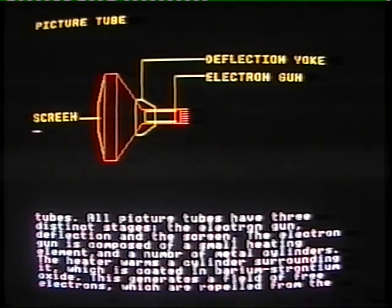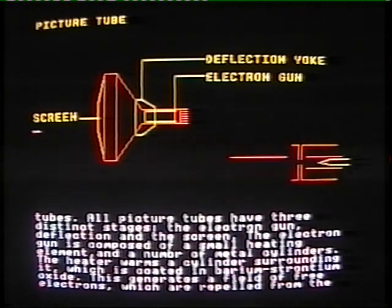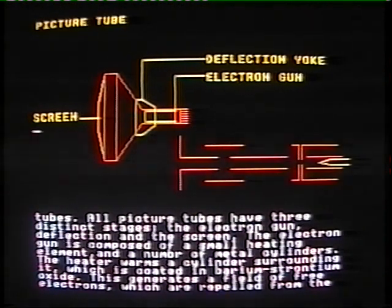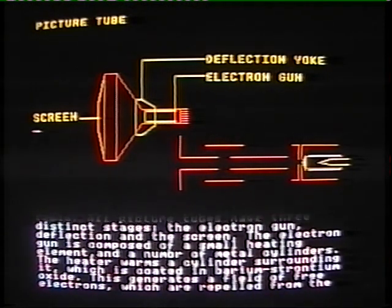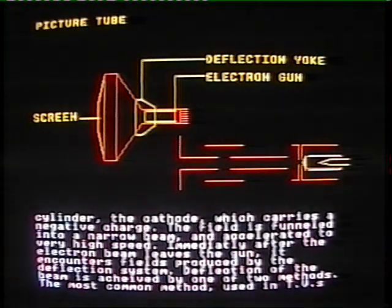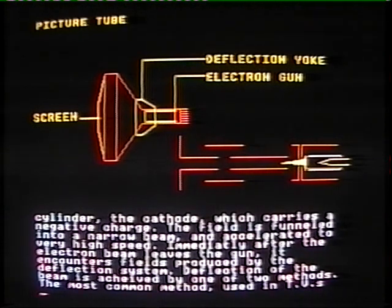The electron gun is composed of a small heating element and a number of metal cylinders. The heater runs a cylinder surrounding it, which is coated in barium strontium oxide. This generates a field of free electrons which are repelled from the cylinder — a cathode — which carries a negative charge. The field is funneled into a narrow beam and accelerates to very high speed.